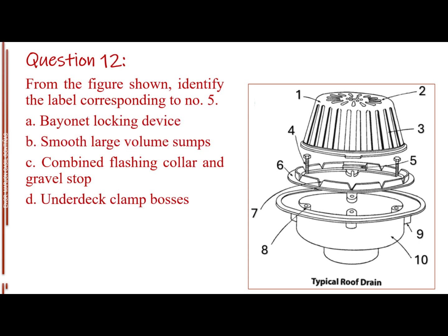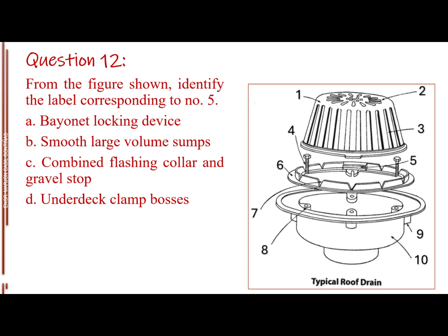Question number 12. From the figure shown, identify the label corresponding to number 5. Letter A, bayonet locking device. Letter B, smooth large volume sumps. Letter C, combined flashing collar and gravel stop. Letter D, under deck clamp bosses. The answer is letter A, bayonet locking device.